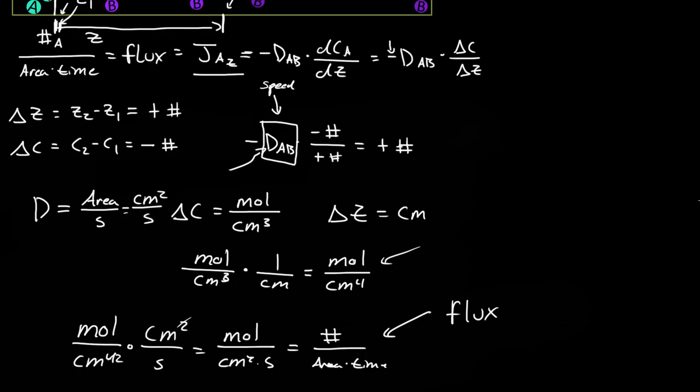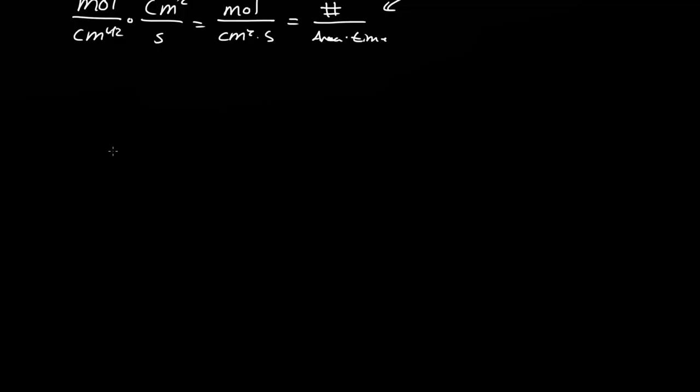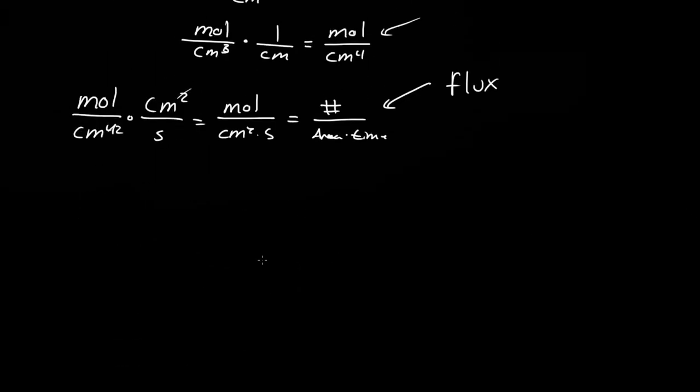And I said that was flux per area, or that was the number of something per area per time. So what if we wanted to know how many ions were traveling through this area? Well, what you would do is you would multiply the flux, J, times the area. And that would get you the number of things, or the moles per second.